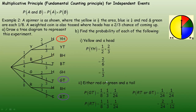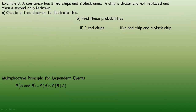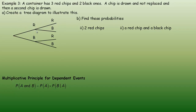Now for dependent events: we have a container with three red chips and two black chips. A chip is drawn and not replaced — like the card example — and then a second chip is drawn. We create a tree diagram to model this. There are two colors, so at the beginning you can get either red or black. After the first draw, you could still get another red or black. The sample space is: red-red, red-black, black-red, or black-black.